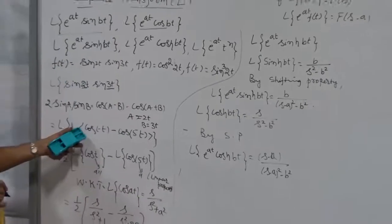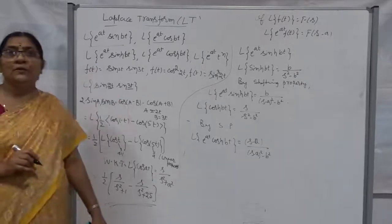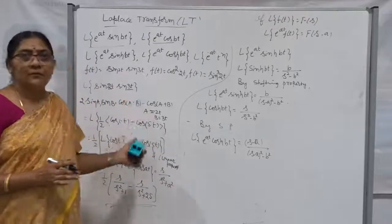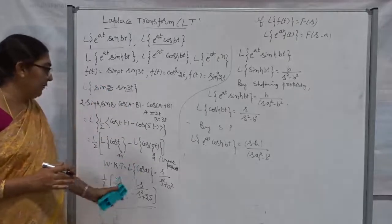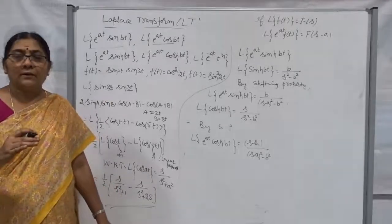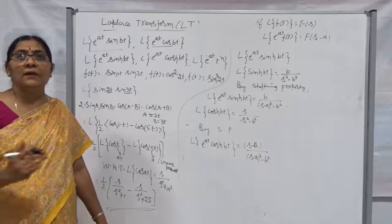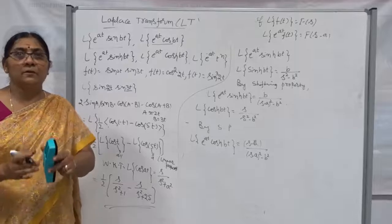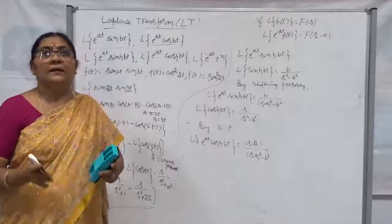We cannot find the Laplace Transform of a product of two trigonometric functions directly. We must first convert the product of two trigonometric functions into a sum or difference using the transformation formula, and then apply the standard formula. This approach works similarly for sin A cos B, cos A sin B, and cos A cos B type problems. In all cases, first write the transformation formula — it is better to write all the transformation formulas separately in your book — and then it is easy to solve.